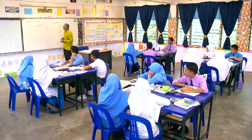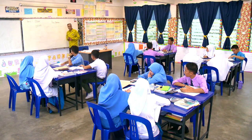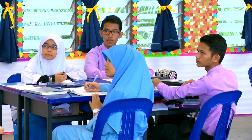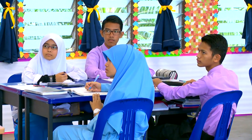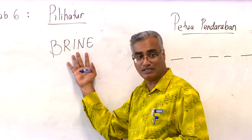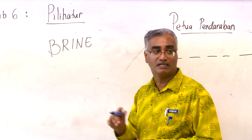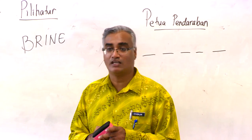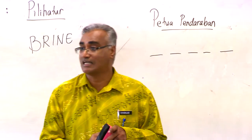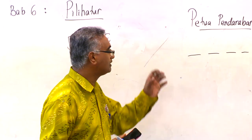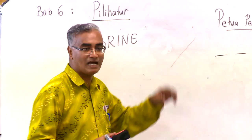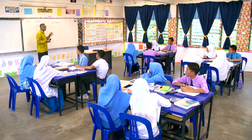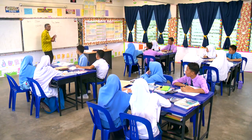Apa yang saya boleh buat ialah yang ini tanpa syarat — menyusun semua huruf dalam perkataan BRINE, B-R-I-N-E, tanpa syarat. Tanpa syarat bermaksud saya boleh ikut suka hati saya. Saya boleh letak B dulu, letak R dulu, letak I dulu — suka hati saya. Itu dipanggil tanpa syarat.